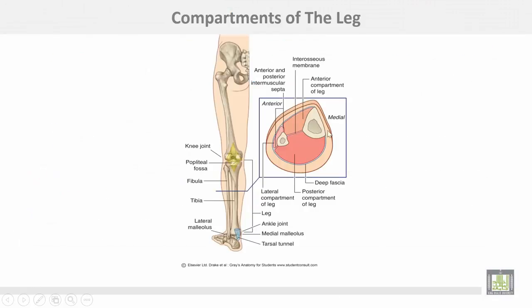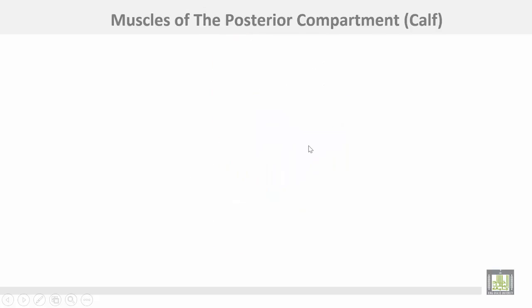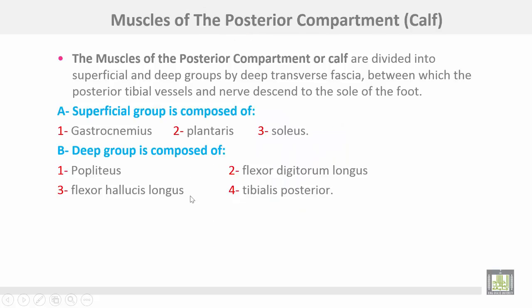These are the two intermuscular septa — anterior and posterior — dividing the muscles into three compartments. This is the anterior or extensor compartment, this is the lateral or peroneal compartment, and this is the posterior or flexor compartment.